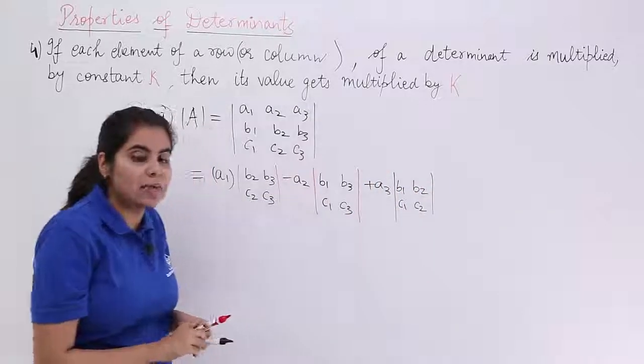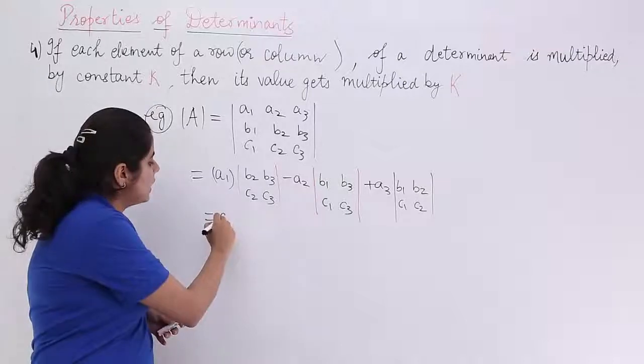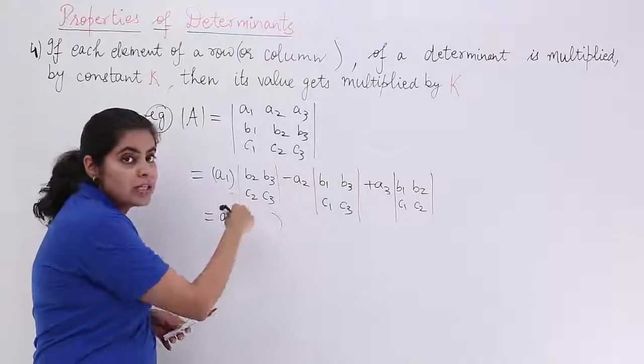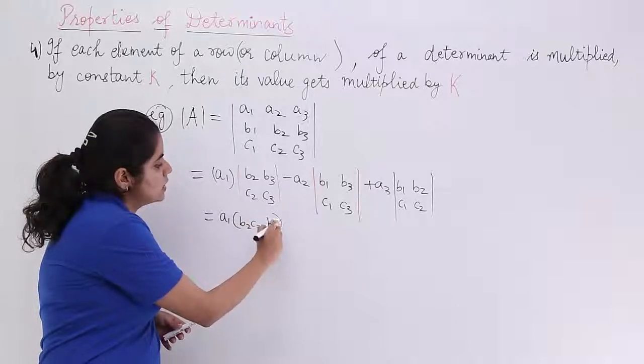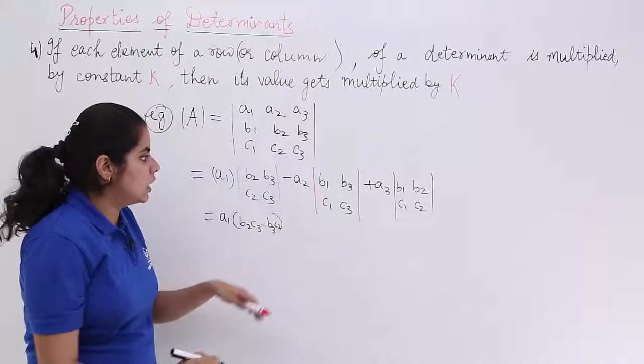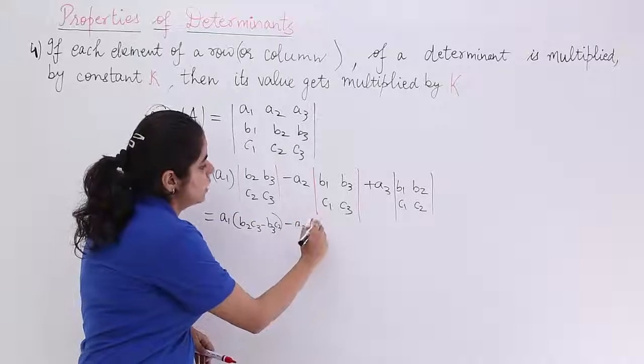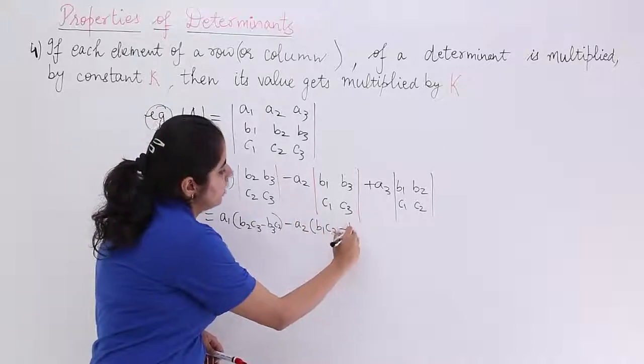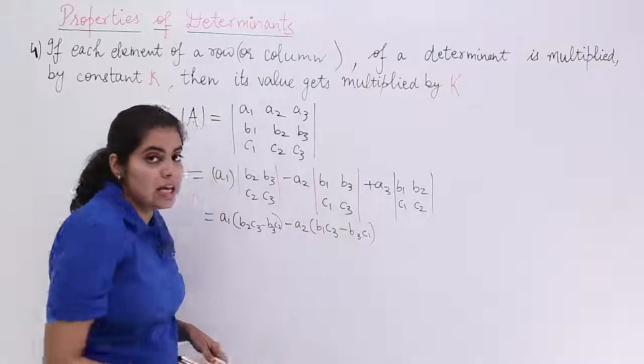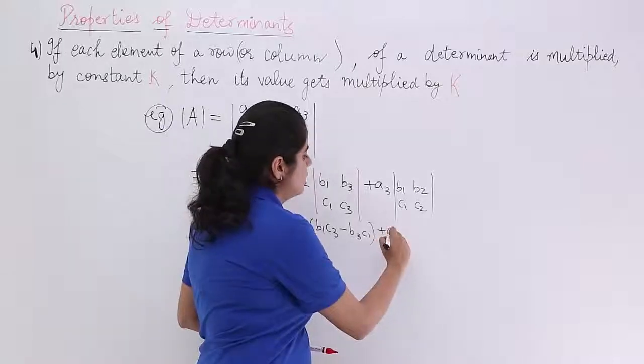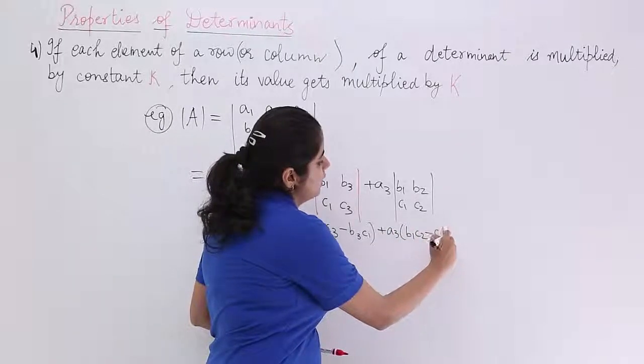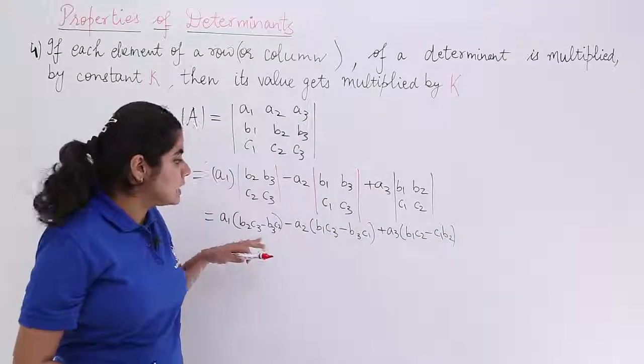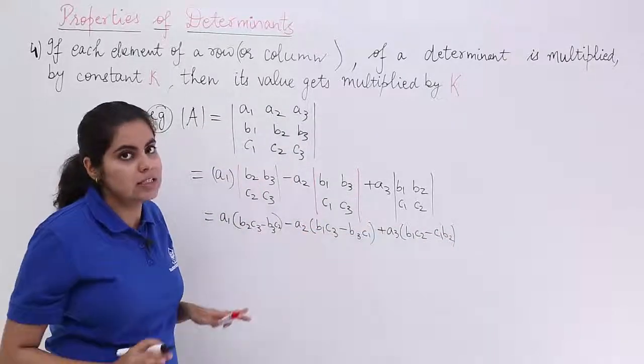Now, what happens is you have to cross-multiply. Cross-multiplying gives me the answer as A1 here. Here, it is B2, C3, minus B3, C2. Here, it is minus A2. It is B1, C3, minus B3, C1. Last but not the least, I have plus A3. It is B1, C2, minus C1, B2 or B2, C1. This is the expansion for this determinant that we know.